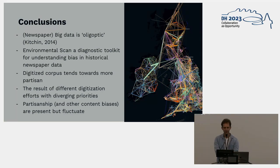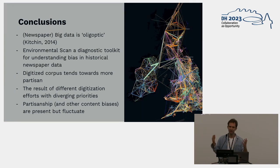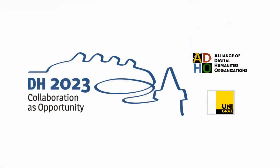In conclusion, we tried to argue that big data is oligoptic, but also tried to articulate this perspective — it's not just a panoptic view on the past, it's a specific kind of view. We used this mostly as a diagnostic way of understanding big historical data. The main findings were that the digitized press is actually way more partisan than we would expect, but also different digitization initiatives have pushed this bias in different directions over time. Thank you.